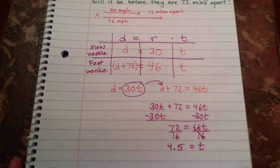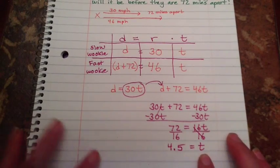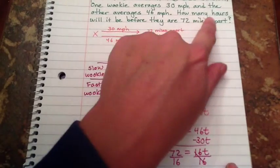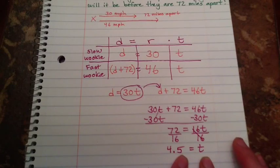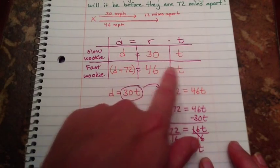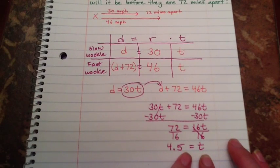Now that I have that, I need to go back and make sure did I find what I'm looking for. I found t, which is time. They asked me how many hours will it be. That is my time. So in 4.5 hours, these two wookies will be 72 miles apart.